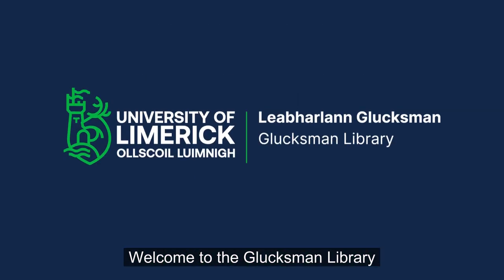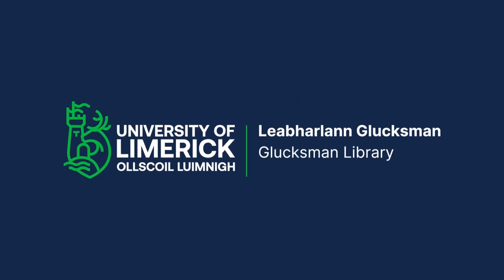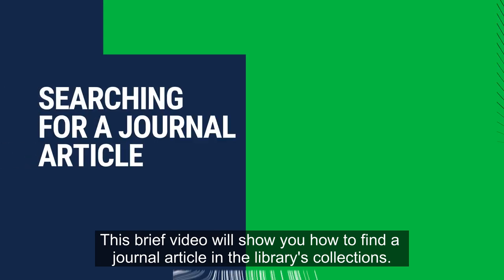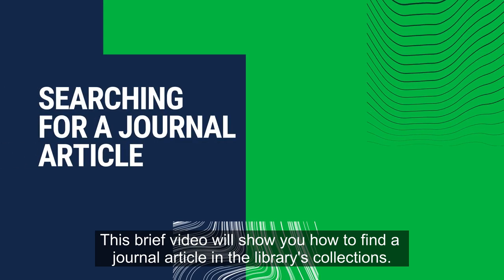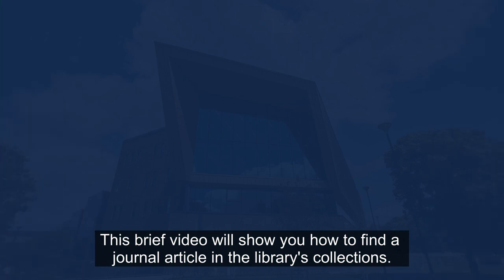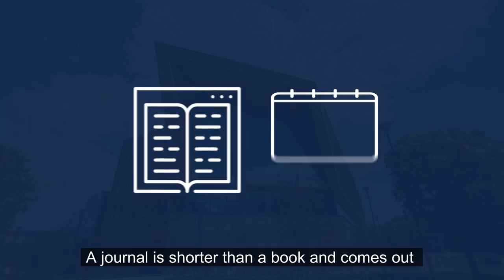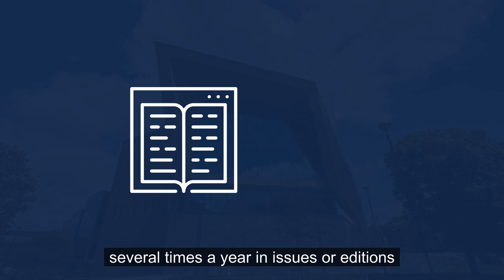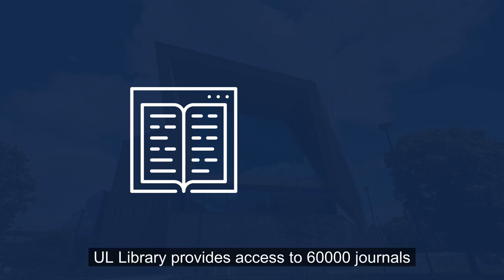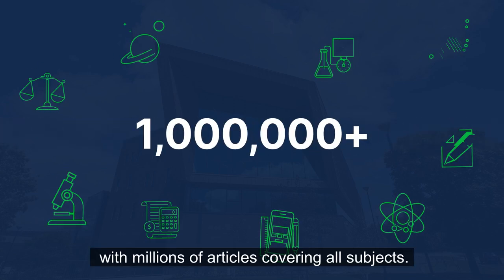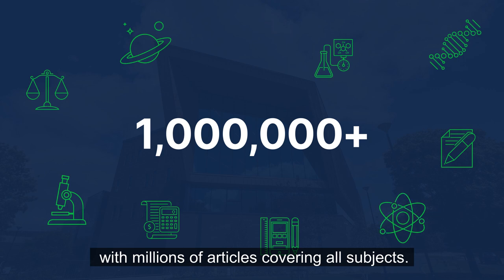Welcome to the Glucksmann Library. This brief video will show you how to find a journal article in the Library's collections. A journal is shorter than a book and comes out several times a year in issues or editions. UL Library provides access to 60,000 journals with millions of articles covering all subjects.